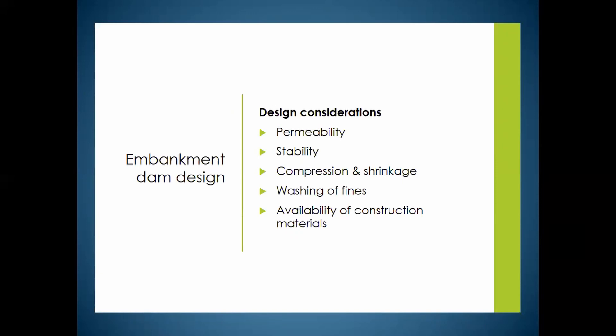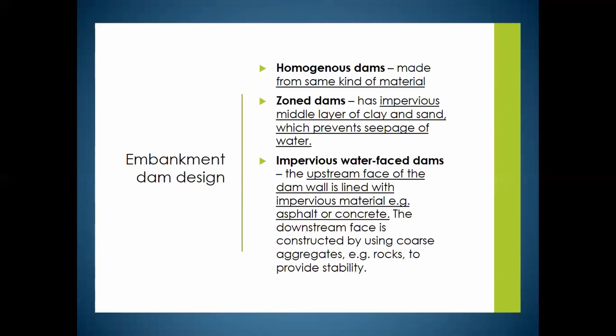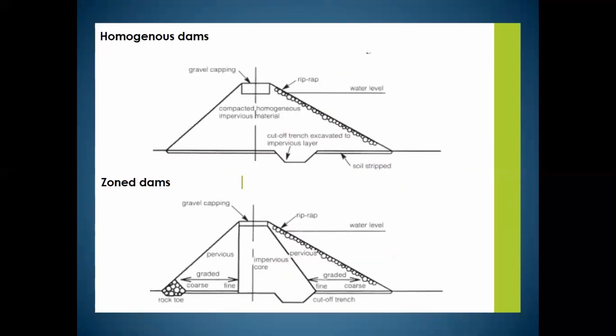Design considerations for embankment dams include permeability, stability, compression and shrinkage, and washing of fines from water splashing on the sides. The availability of construction materials - whether there is enough soil in the area - is also key. The three main types are homogeneous dams, made from the same material; zoned dams, with an impervious middle layer of clay and sand to prevent seepage; and impervious water-faced dams, where the upstream face is lined with an impervious material such as asphalt or concrete.